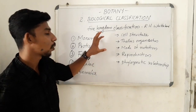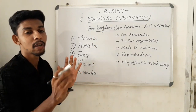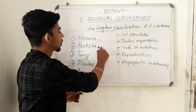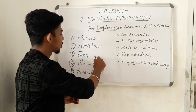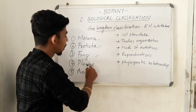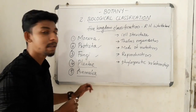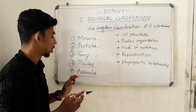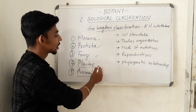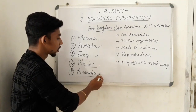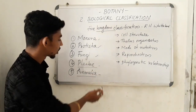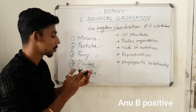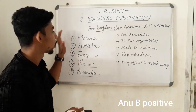In this chapter we learn about classification. We will study Kingdom Monera, then Kingdom Protista, then Kingdom Fungi, then Kingdom Plantae, and Kingdom Animalia. We are currently learning about the plant kingdom, and in the next chapter we will learn about the animal kingdom.